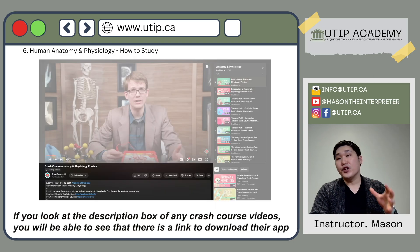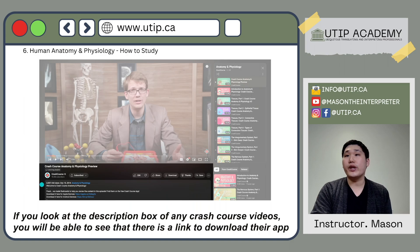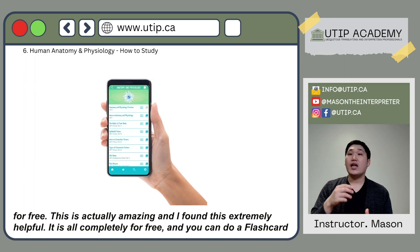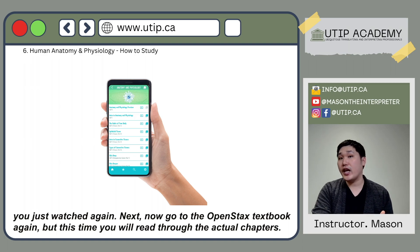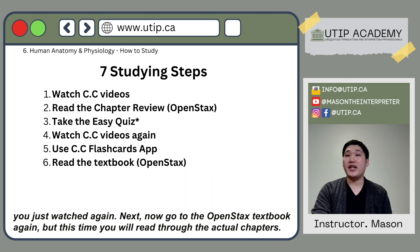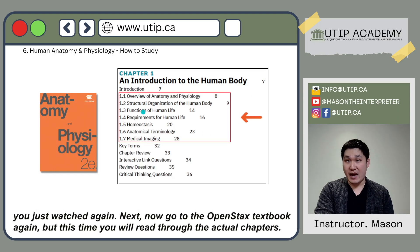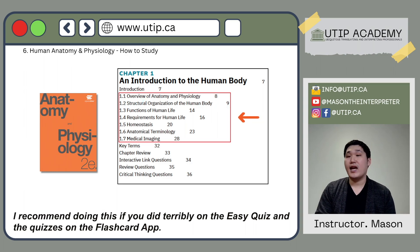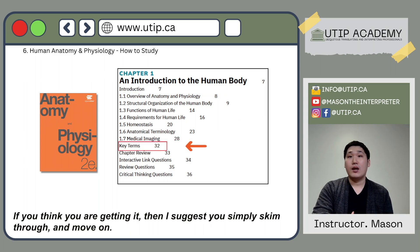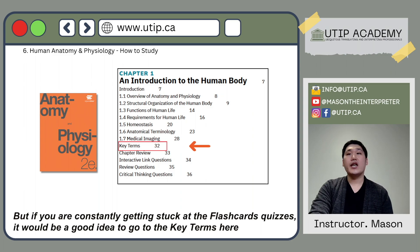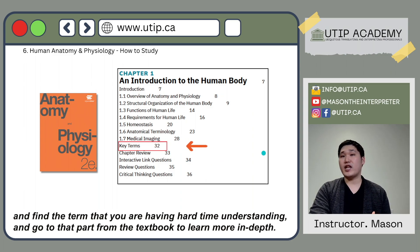The next step is to use the Crash Course flashcards. In the description box of any Crash Course video, there is a link to download their free app. You can do a flashcard type or a quiz type — I found this extremely helpful. Spend some time on this app for the chapter you just studied. After that, go back to the OpenStax textbook and read through the actual chapters. I recommend this especially if you did poorly on the easy quiz and flashcard quizzes. If you are constantly getting stuck, go to the key terms and find the ones you are having trouble understanding, then read that part of the textbook in more depth.